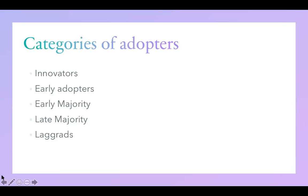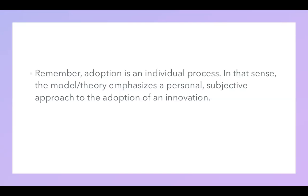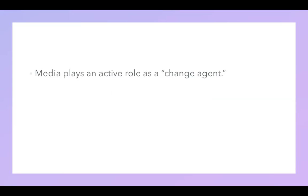It is not important for you to go into the details of the categories of adopters — this is just additional information to enhance your understanding of the diffusion of innovation process. Remember that adoption is an individual process. Each person is different, and the process of adoption works at a different level for all individuals. In that sense, the model emphasizes a personal, subjective approach to the adoption of an innovation.